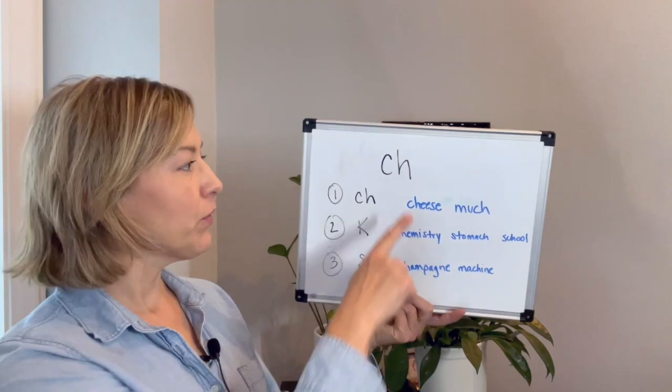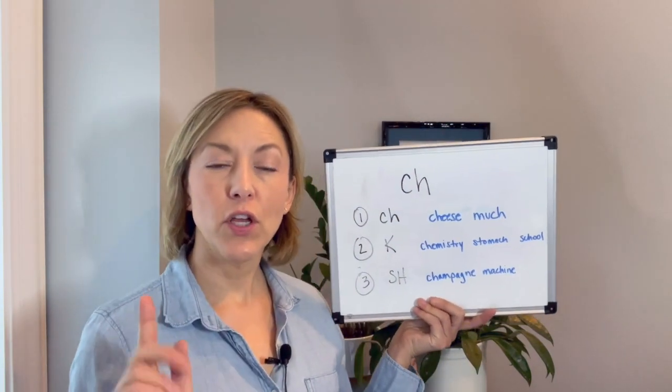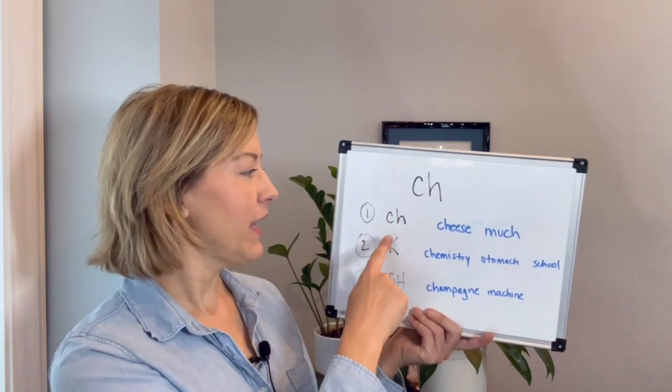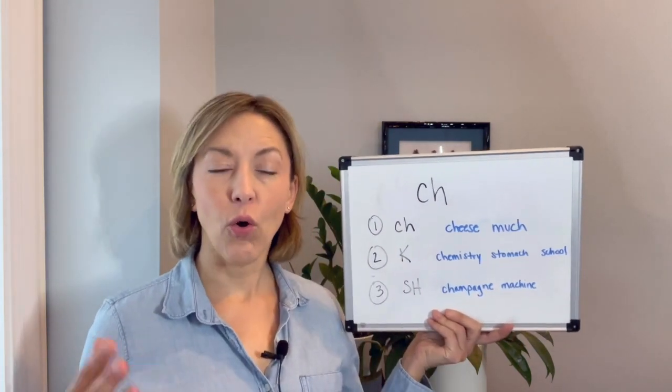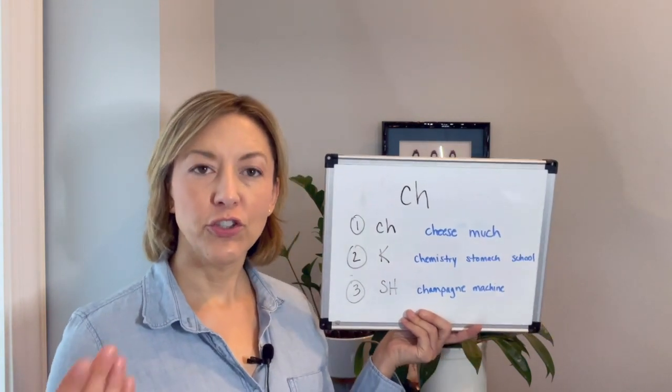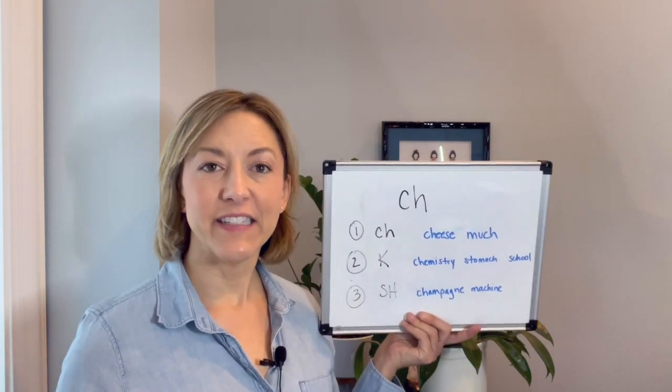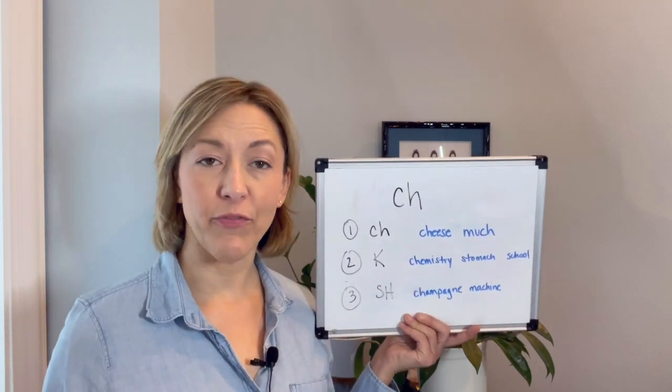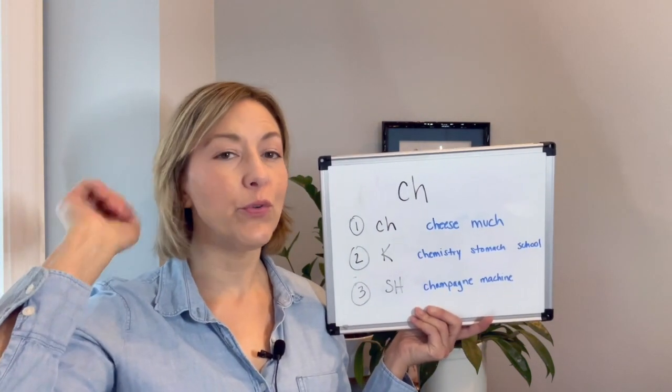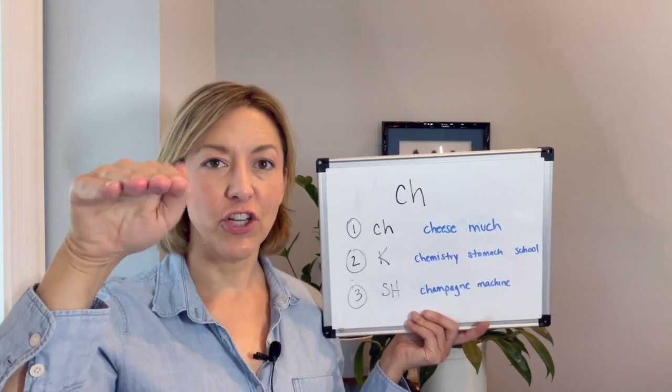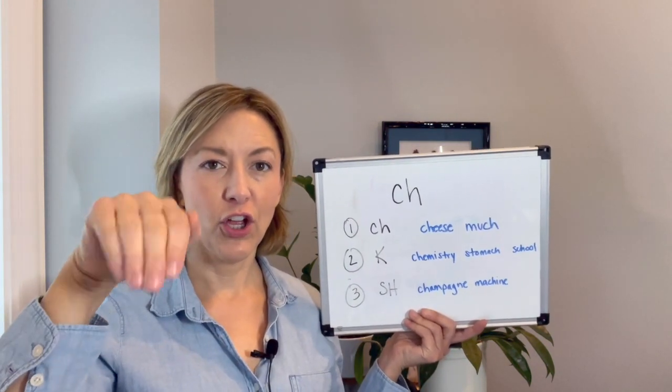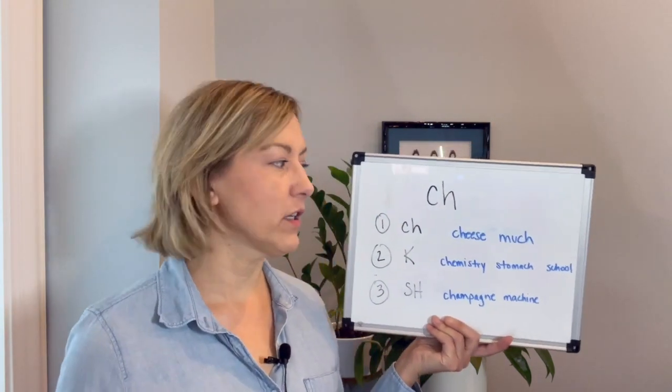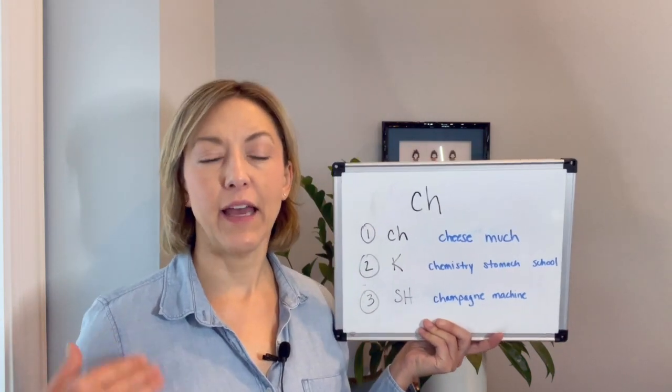Okay, so we have two letters. Typically these two letters stand for one sound and that's the CH sound. To make that CH sound, you're going to touch the tip of your tongue to the back of your top front teeth and then the tongue pulls back. You can see my lips are slightly rounded and we see this in words like cheese and much.